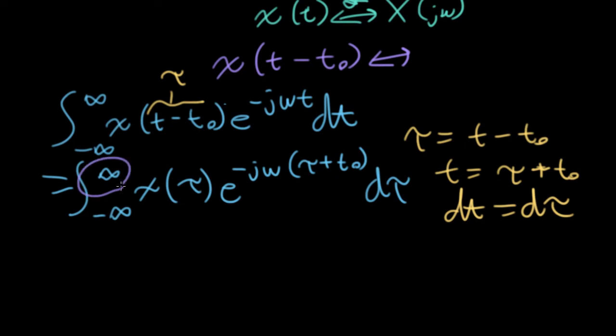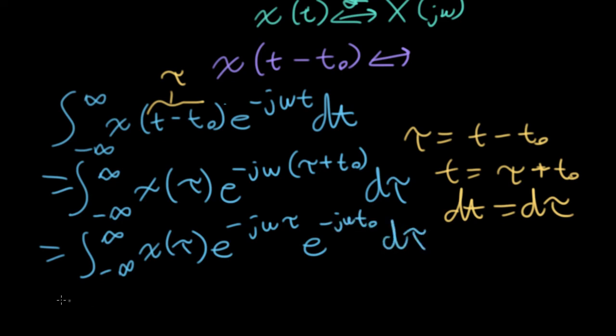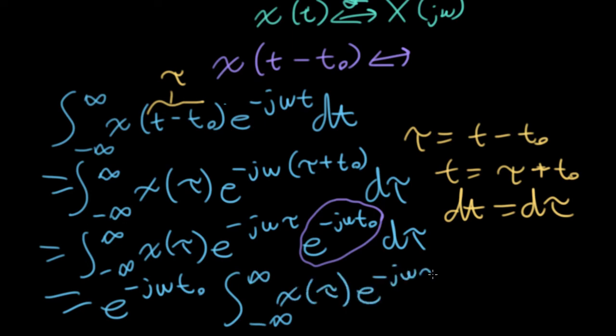I should mention that in general, you'd also need to think about what happens with the limits. But here I'm going to be adding or subtracting something, and adding and subtracting something from minus infinity or infinity doesn't change anything there. We still have an integral going from minus infinity to infinity. So in the next step, we're going to take our exponent and split it up. So I'll write this as e to the minus j omega tau, e to the minus j omega t naught d tau. And then this e to the minus j omega t naught, that is not a function of tau, so I can pull it out in front and write it as e to the minus j omega t naught. Then I've got this integral of minus infinity to infinity, x of tau, e to the minus j omega tau, d tau.